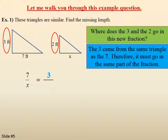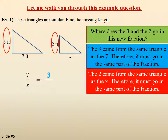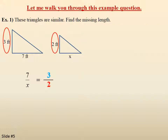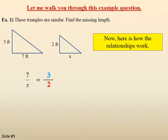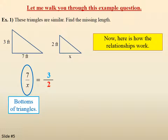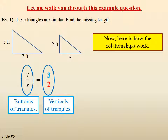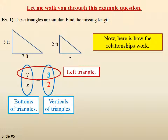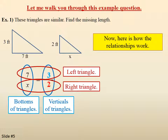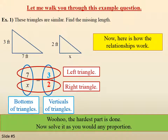Since the seven was on top, the three goes on top. The two came from the same triangle as the X, therefore it must go in the same part of the fraction — so the two goes in the bottom. The first fraction represents the bottoms of the triangles; the second fraction represents the verticals. The numerator is from the left triangle and the denominator is from the right triangle. The hardest part is done — now solve it as you would any proportion.